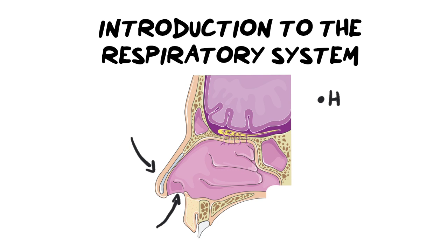The first thing inside your nose is hairs. Nose hairs are there to trap any foreign particles from moving deeper into your nasal passage. They also provide something for mucus to attach to, so that when a particle like a virus or bacteria moves through your nasal passage it gets stuck on the hairs and the mucus, and doesn't go any further. This brings us to the other thing we often find inside the nose, which is mucus.